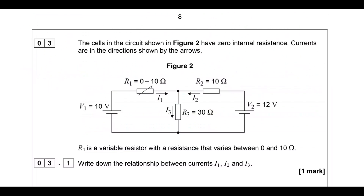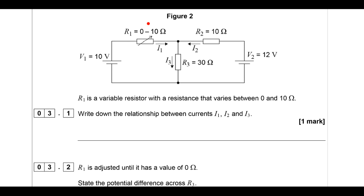Now we have a circuit question. We've got some cells with no internal resistance and currents in the directions shown by the arrows. R1 is a variable resistor with resistance varying between 0 and 10 ohms. Write down the relationship between currents I1, I2, and I3 - this uses Kirchhoff's current law. The sum of currents entering a junction equals the sum leaving. Entering the top junction: I1 and I2 are both going in, and I3 is coming out. So I1 + I2 = I3 - an expression of conservation of charge.